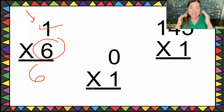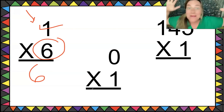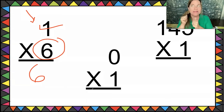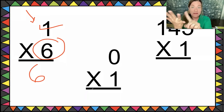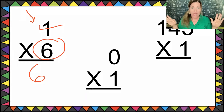One times six is six. One times any number equals that number — even if it's negative, a fraction, a big number, small number, decimal — you can use this forever.